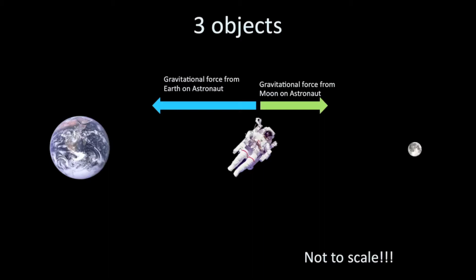Because these forces are not the same and are in opposite directions, there is a net force — the difference between them. The net force on the astronaut is pointed in the direction of the leftover force, in this case towards the Earth. Because there is a net force on the astronaut, if left there, the astronaut would begin to accelerate towards the Earth. As they got closer to the Earth, the Earth's gravitational force would get bigger, so they would continue to accelerate, and the Moon's force would get smaller — so the net force toward Earth actually gets bigger as the astronaut approaches Earth.